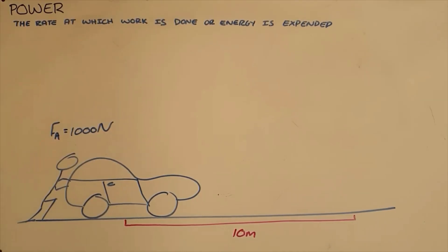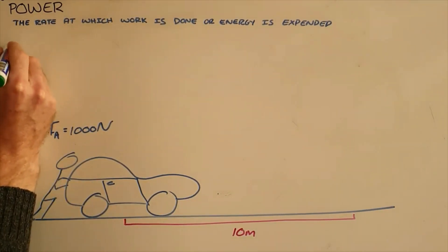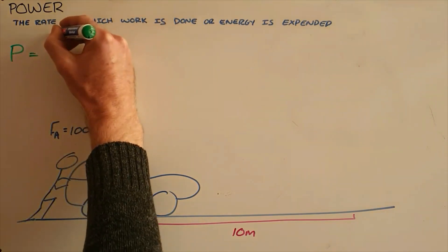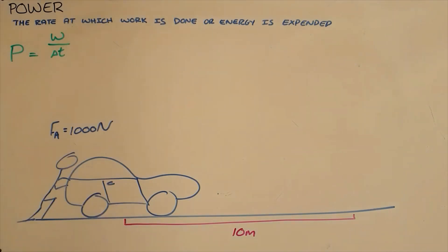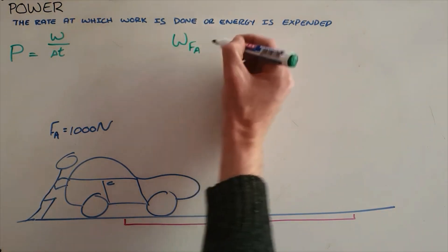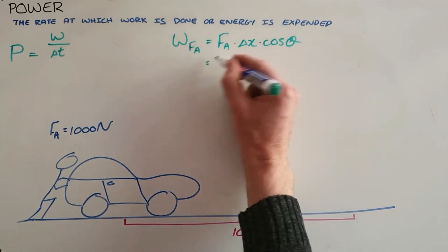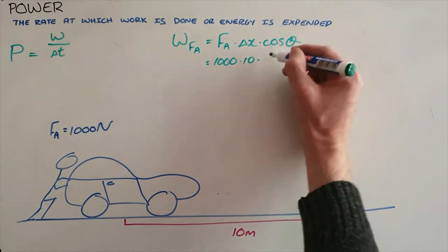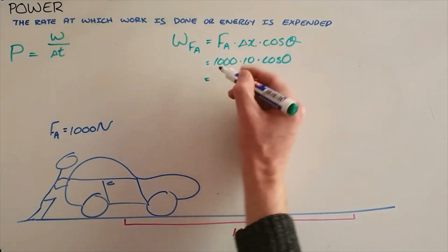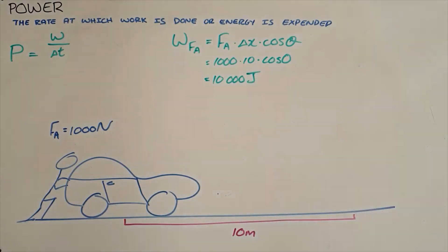Power is the rate at which work is done or energy is expended. From that definition the formula is P = W/t — work divided by time. We can demonstrate the difference between work and power: a person applies a 1000 newton force to push a car 10 meters. The work done is W = 1000 × 10 × cos(0°) = 10,000 joules. Until this point we have not considered the speed at which this is done.